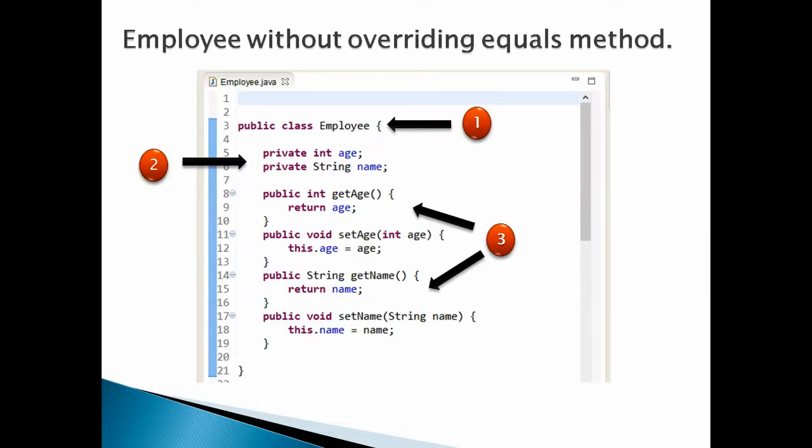Let's discuss the code of the Employee class point by point. Number one, create a class Employee. Number two, in the Employee class, create two instance variables: age and name. Number three, provide getters and setters for each of the properties. This class is without the equals method overridden — it has default functionality for the equals method, which has been provided to it by the Object class.